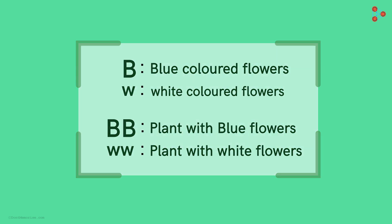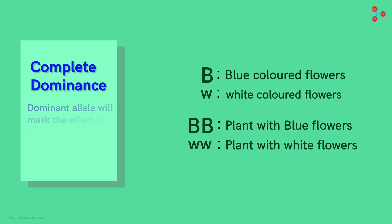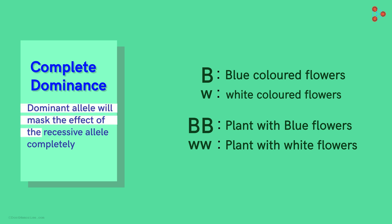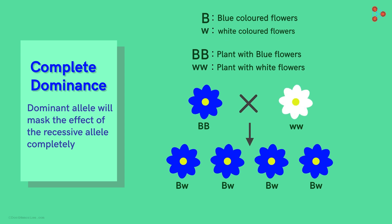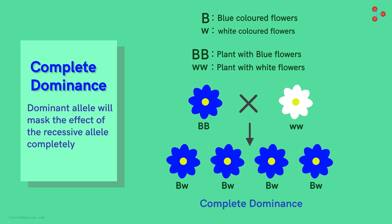The first type is complete dominance, where the dominant allele masks the effect of the recessive allele completely. On crossing the blue and white flowered plants, we will obtain only blue coloured flowers. To be precise, crossing the two homozygous varieties gives all heterozygous offspring. Since this is a case of complete dominance, all the plants will have blue coloured flowers.